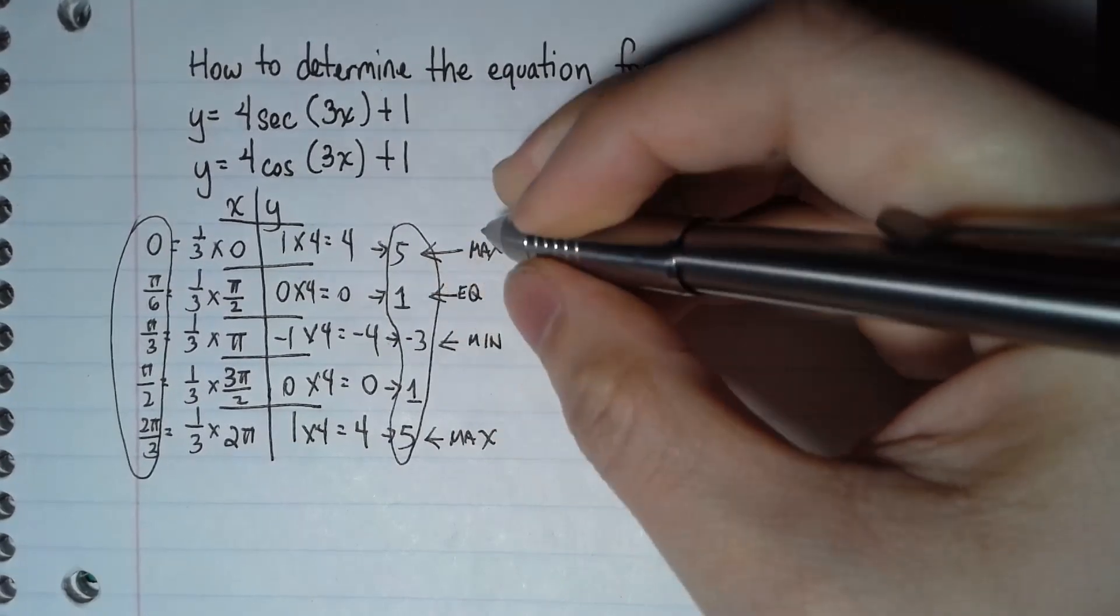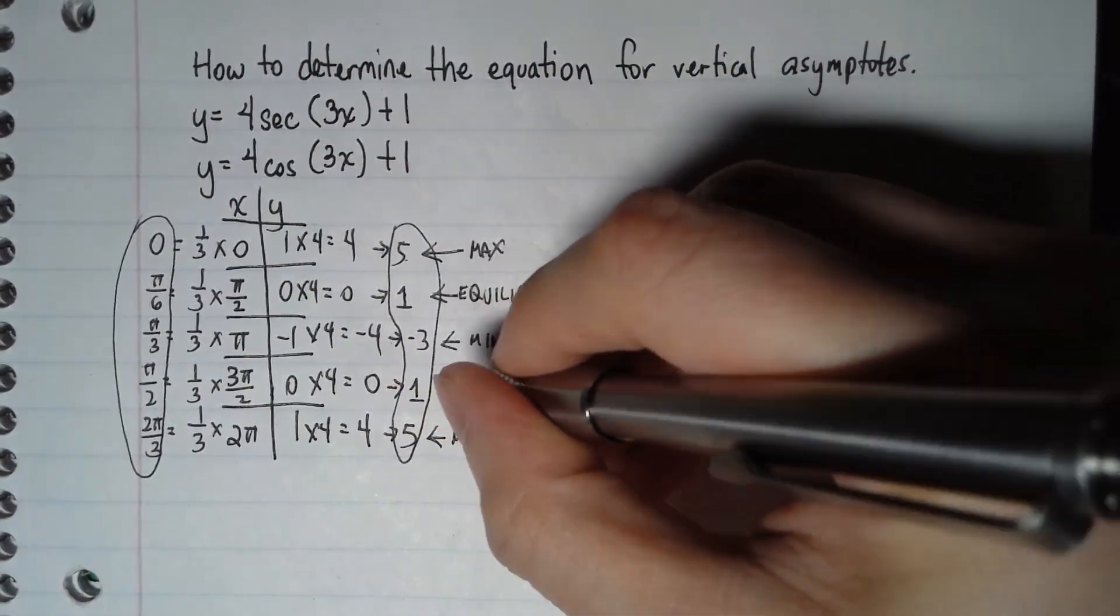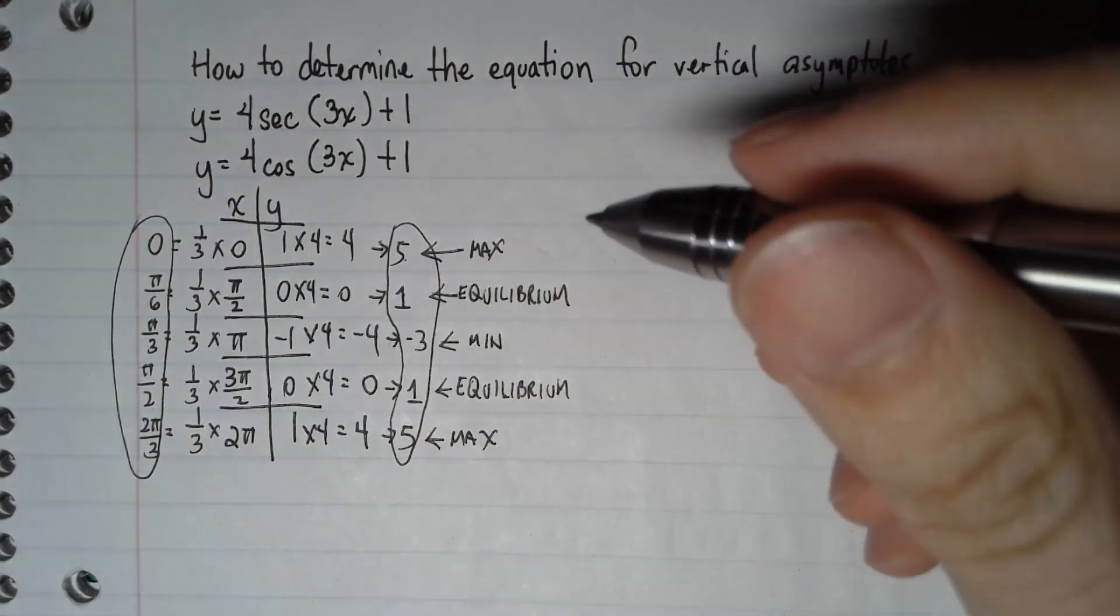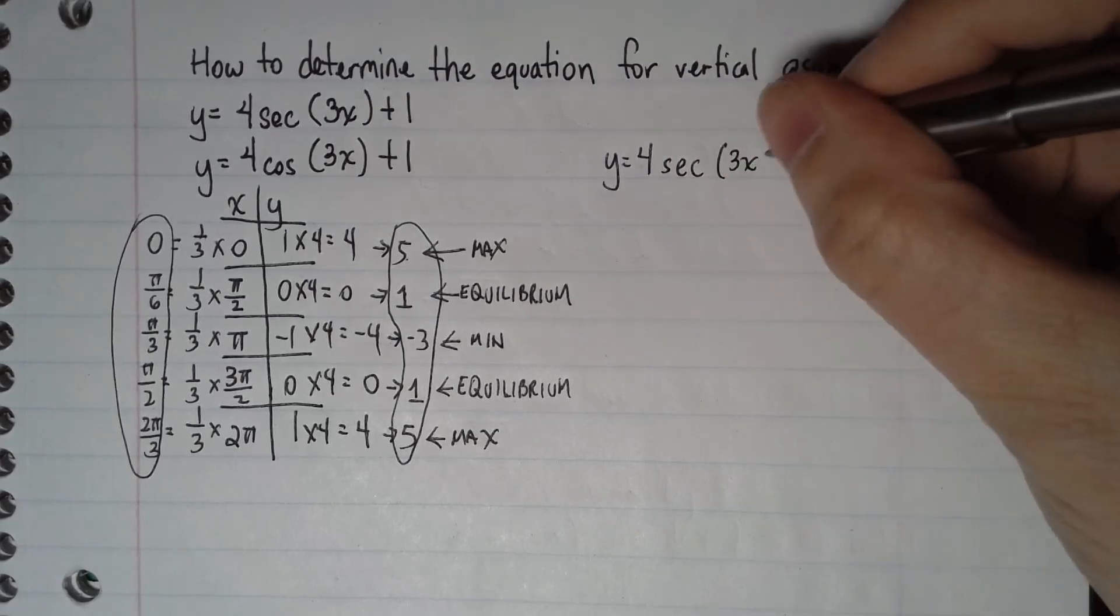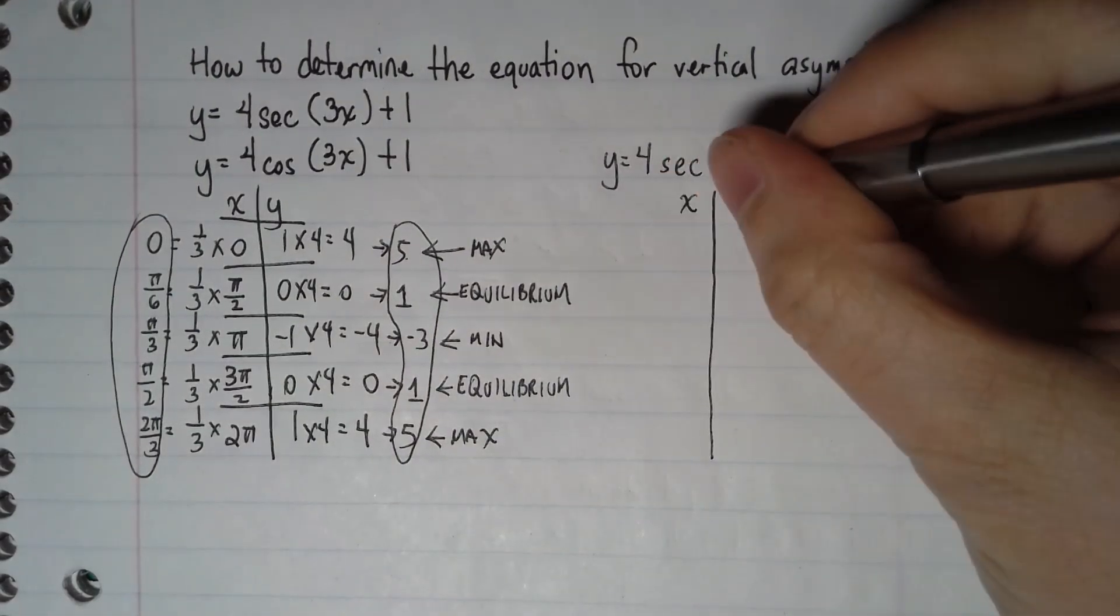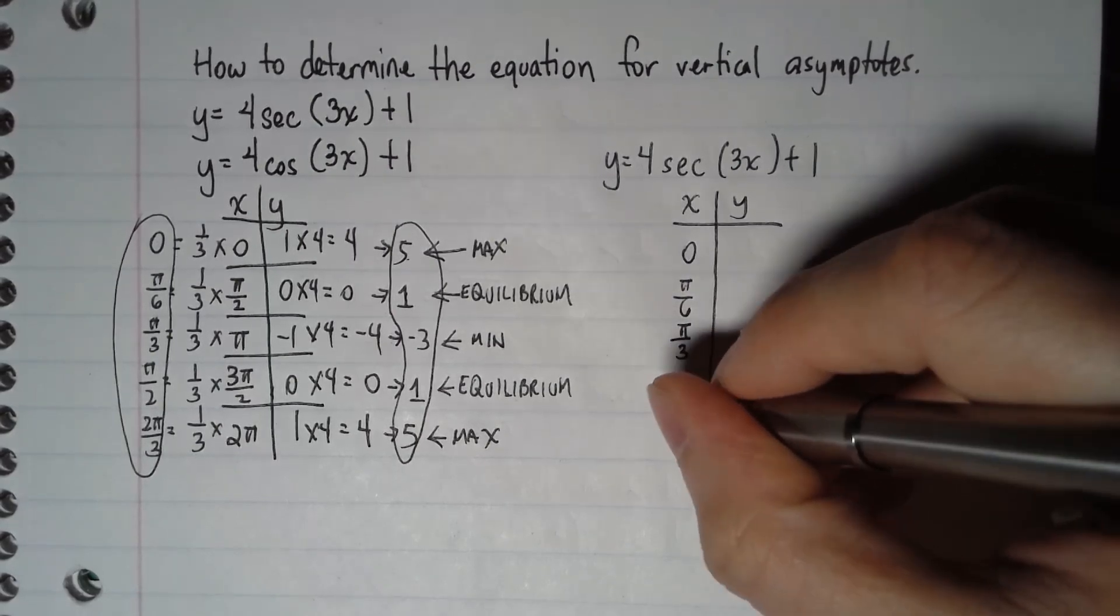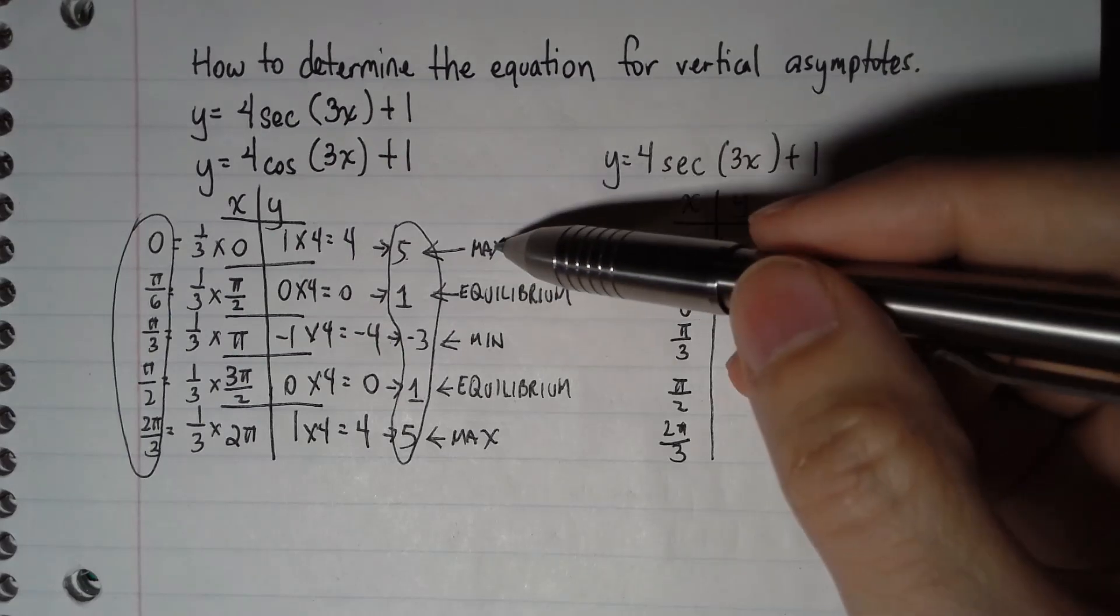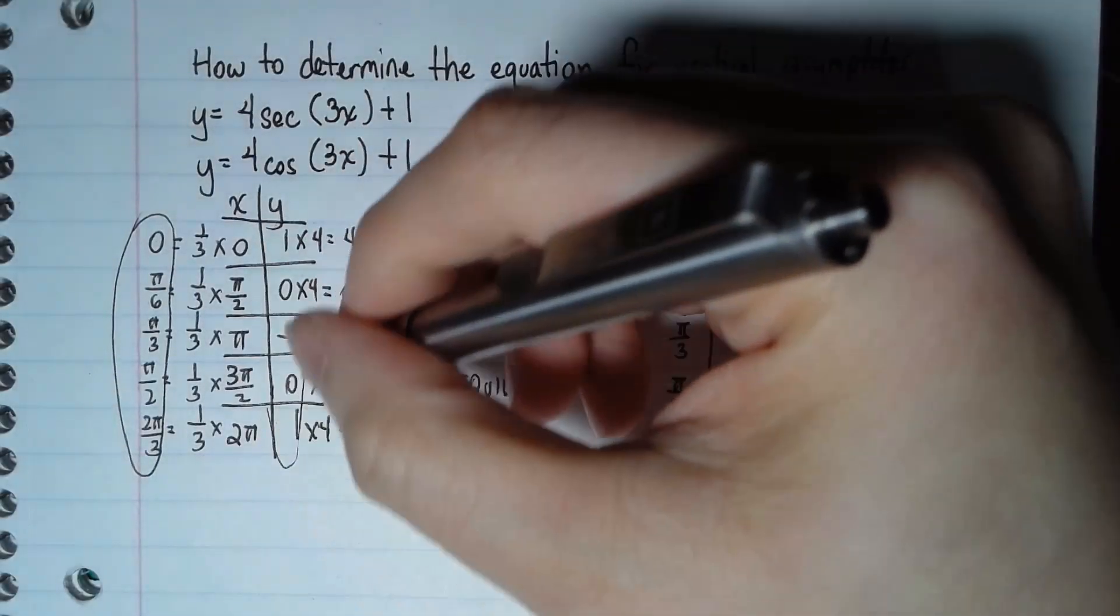Now we're not trying to graph cosine, we're trying to graph secant. That's what we're trying to graph. Now this x portion would still be exactly the same. But this right here will not be a maximum anymore, it will not be a minimum, it will not be equilibrium because they will change. They technically have to be the reciprocal of the original.